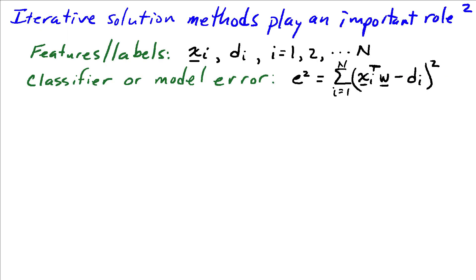Now iterative solution methods play a very important role in machine learning. We're going to look at the classic problem of a set of features and labels. So the features are xi and the labels corresponding to each feature is di, and we have capital N of those. And we'll define our classifier or our model error as e squared be the sum of the squared errors between the prediction of that label using our classifier w and the feature xi and the actual label. We'll add the errors up over all the labels from 1 to N.